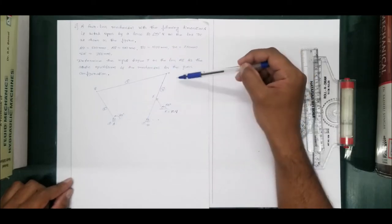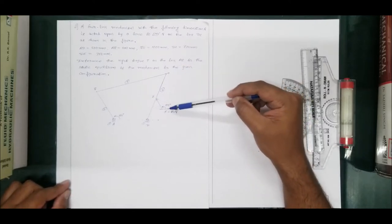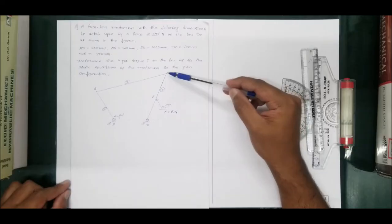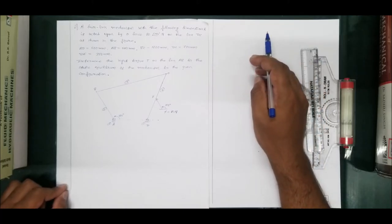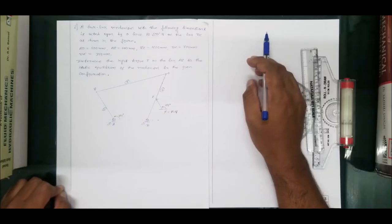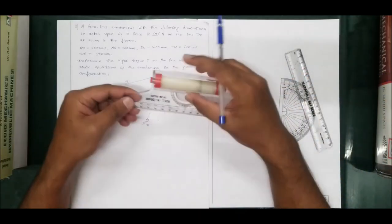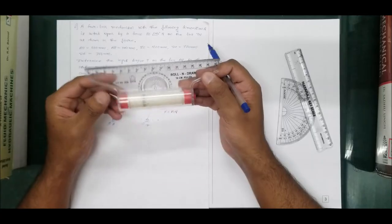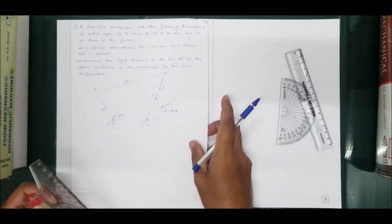This is a 4-bar mechanism. On link DC, we have a load of 80 Newtons acting at an angle of 150 degrees as specified in the diagram. As I said in our previous problem, we should always redraw the given problem to scale in Step 1. Therefore, let us reconstruct the given problem as per scale. The roller scale will be very useful in solving problems on static force analysis.